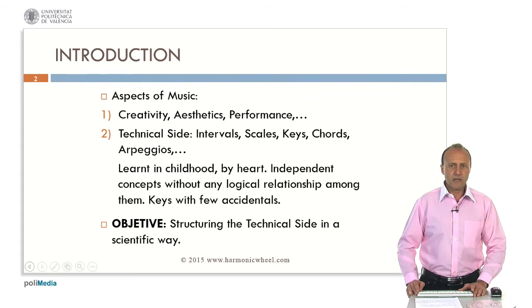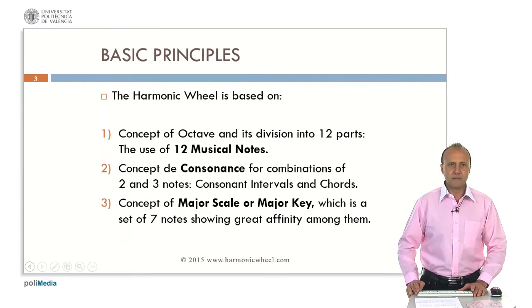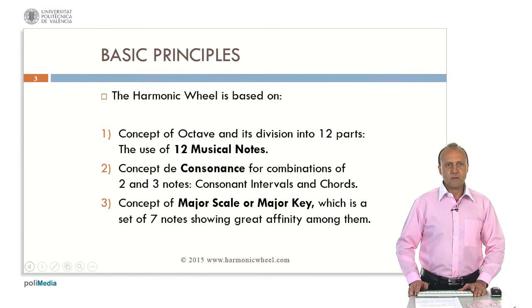This is a very hard task, but the results are very easy to understand. From my point of view, the basic principles in western music are three. First, the concept of octave and its division into twelve parts. This means that we use twelve musical notes. Second, the concept of consonance for combinations of two and three notes, that is, consonant intervals and consonant chords. And third, the concept of major scale or major key, which is a set of seven notes showing great affinity among them.